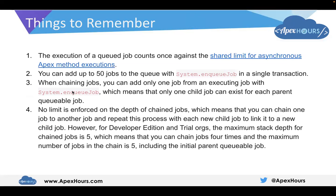Here are some things to remember while working with Queueable Apex. The execution of a queued job counts once against the shared limit of asynchronous method execution. Queueable Apex comes under asynchronous Apex, so all the async governance limits are enforced. We can add up to 50 jobs to the queue with System.enqueueJob in a single Apex transaction. When chaining jobs, we can add only one job from an executing job with System.enqueueJob, which means only one child job can exist for each parent queueable job.